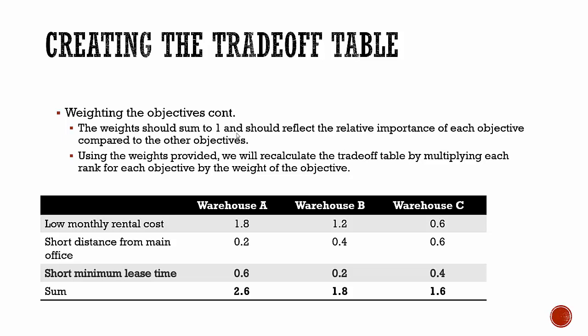Using the weights provided, we recalculate the trade-off table by multiplying each rank for each objective by the weight of that objective. Warehouse C had a rank of 1 for monthly rental cost, multiplied by 0.6 gives 0.6. Warehouse B had a rank of 2, multiplied by 0.6 gives 1.2. Warehouse A had a rank of 3, multiplied by 0.6 gives 1.8, and so on.